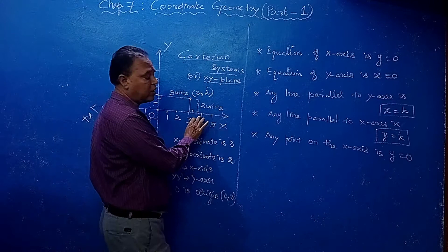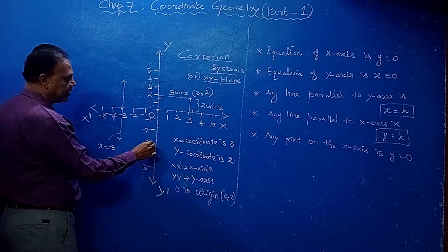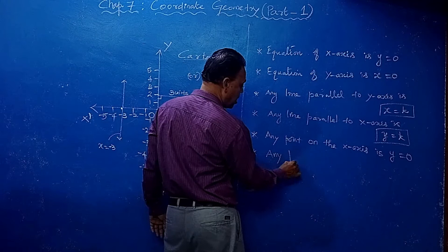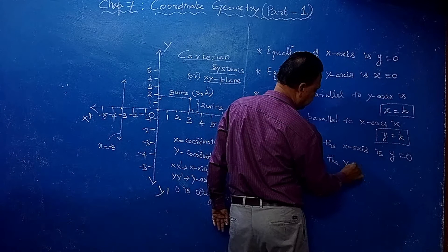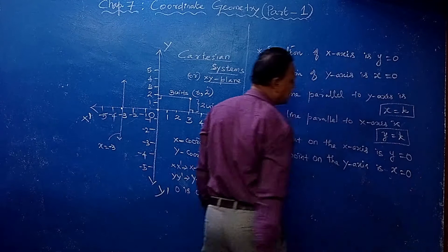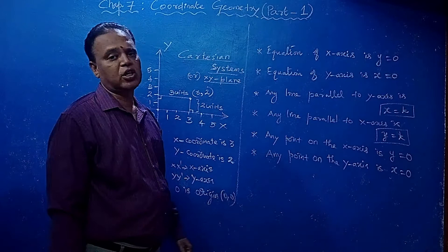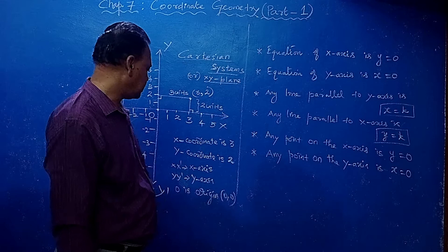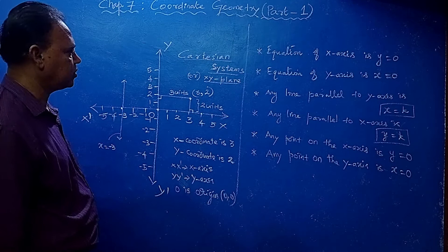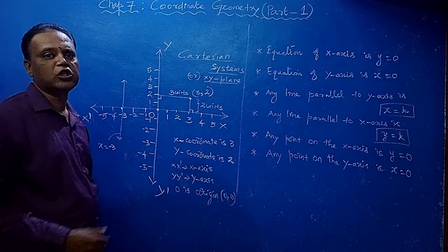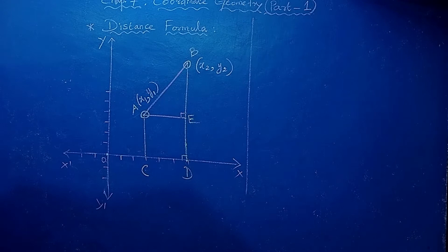Any point on the y-axis has x equal to 0. These are very useful, basic, and fundamental ideas in coordinate geometry that you must remember.